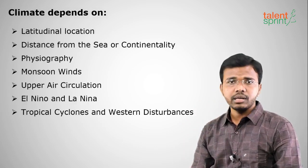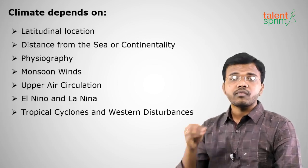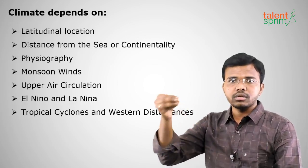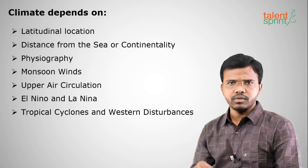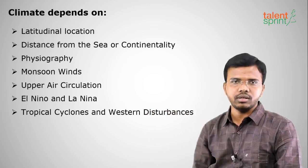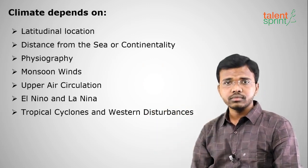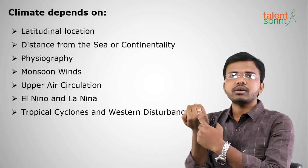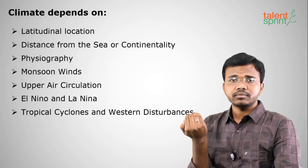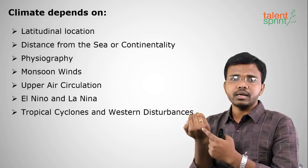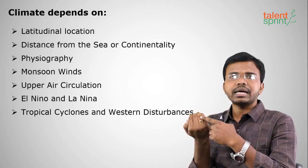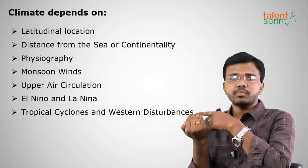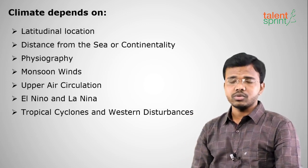Moving on to the factors that climate depends on. The first is latitudinal location — from the equator, whether you are in the northern hemisphere or southern hemisphere, whether you are near to the equator or far away, or near the poles. Because the Earth is almost a sphere shape, the equator will receive more heat than the poles. So if you are near the equator you will have tropical climate, in the mid-latitudes temperate climate, and near the poles polar climate.